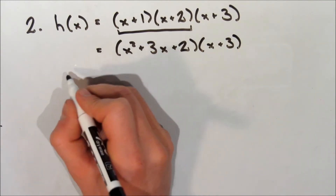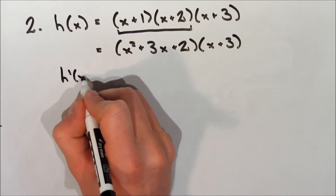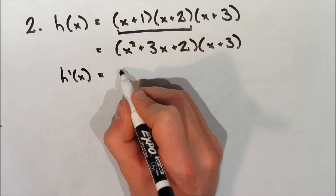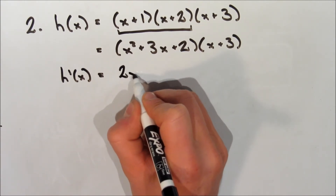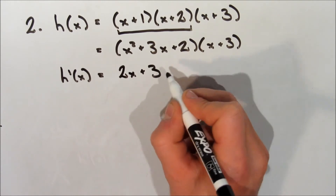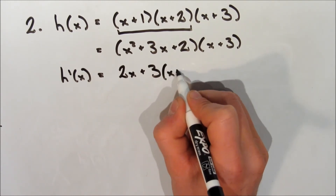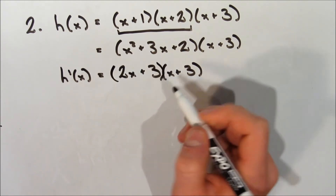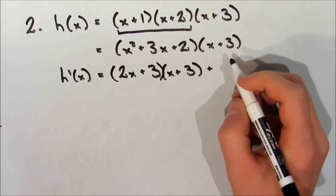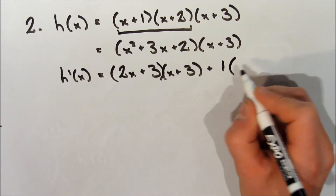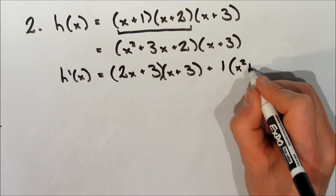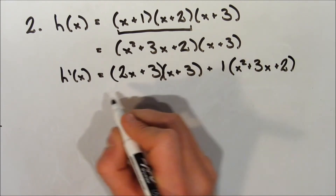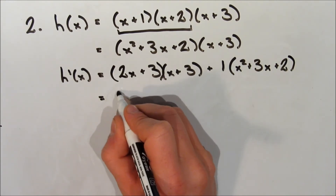The third term, x plus 3, becomes our g of x. Then we do the same thing as before. H prime of x is equal to the derivative of the first function, which is 2x plus 3, multiplied by x plus 3. We add the derivative of the second function, which is 1, multiplied by the first function, x squared plus 3x plus 2.